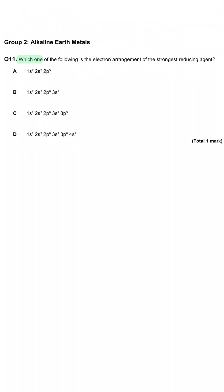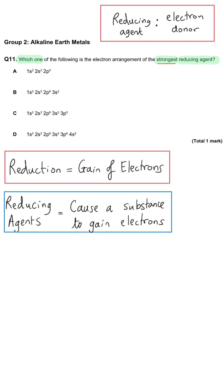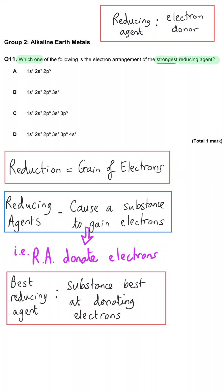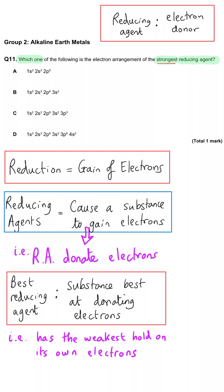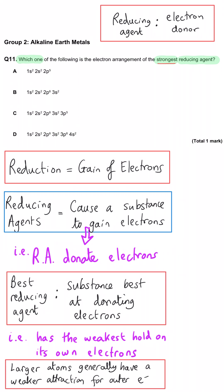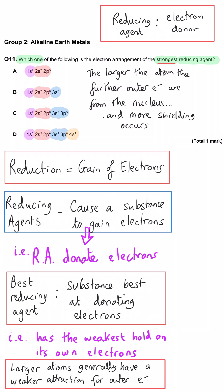Which electron arrangement belongs to the strongest reducing agent? Reducing agents give away their electrons to cause reduction in something else. The strongest reducing agent is best at giving away electrons, which means it has the weakest hold over its outer electrons. As an atom gets larger and its outer electrons get further from the nucleus, those electrons are lost more easily due to reduced nuclear attraction and increased shielding. So we're looking for the one with the most electron shells — the answer is D, with outer electrons in the fourth energy level.